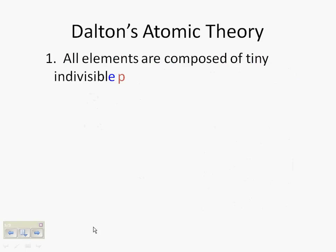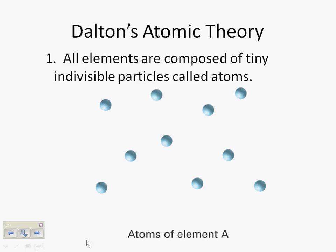Dalton's atomic theory has five parts to it. He said all elements are composed of tiny, indivisible particles called atoms. And there we go. So there's atoms of element A.